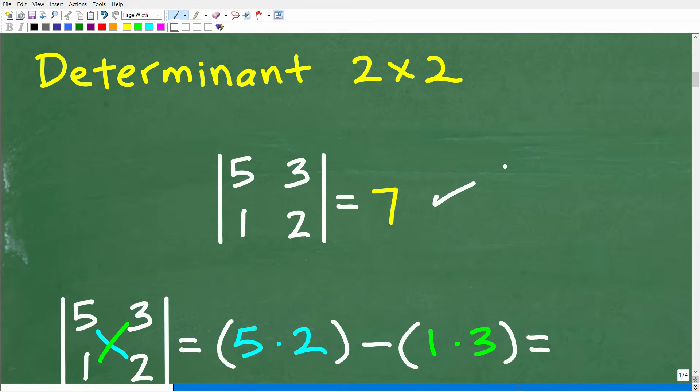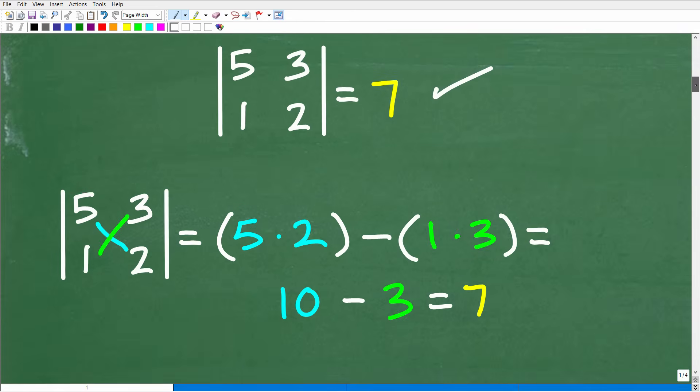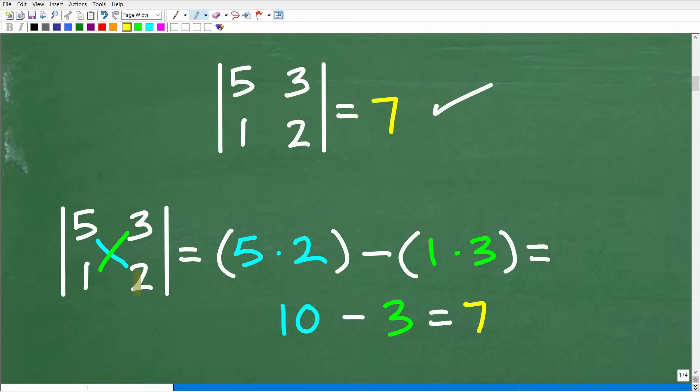The determinant of a two by two matrix - we see the answer is seven. It is super easy. All you need to do is follow this pattern. We're going to multiply across this way. These entries of this matrix, you're going to multiply diagonally. This is going to be five times two. You're always going to start in this direction - there's a very specific pattern here.